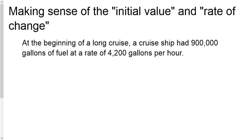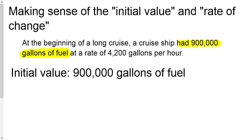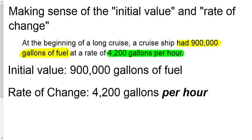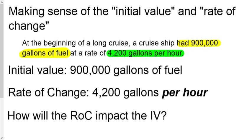At the beginning of a long cruise, a cruise ship had 900,000 gallons of fuel, and it was consuming it at a rate of 4,200 gallons per hour. The initial value is the starting point — 900,000 gallons of fuel — and it's going to start being burned off. What's happening over and over again in this problem is the 4,200 gallons per hour burning every hour — that's the rate of change.